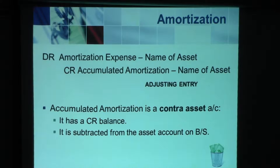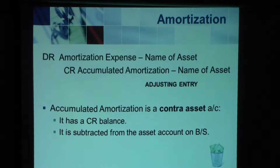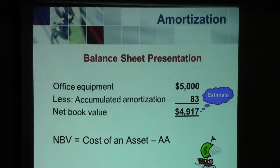The adjusting entry for amortization is: debit amortization expense for that asset, and credit accumulated amortization for that asset. Remember, accumulated amortization is a contra-asset account, which means it carries a credit balance on the asset side. Usually asset accounts have debit balances, but accumulated amortization has a credit balance, which reduces the value of the asset. It is not a liability account because you do not owe anyone anything — that is why it is a contra-asset account.